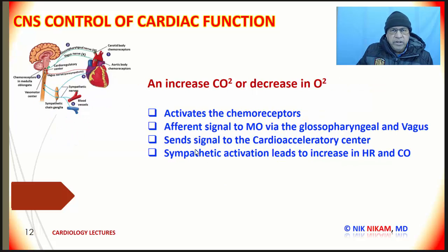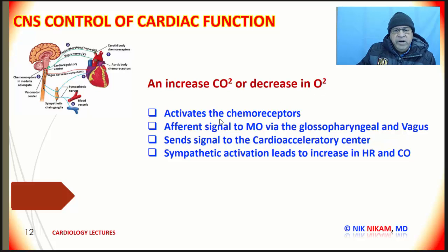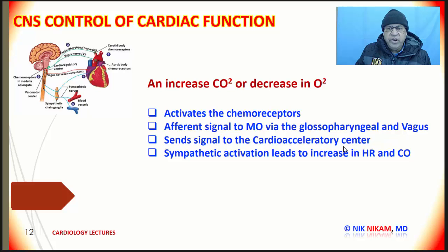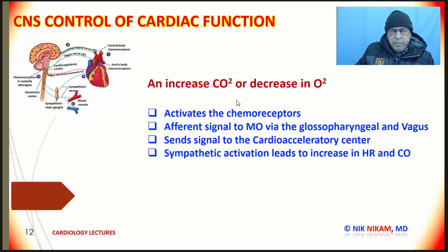Let's talk about the chemoreceptors. The chemoreceptors respond to changes in the arterial pH, oxygen saturation, and carbon dioxide saturation. If there is an increase in carbon dioxide or a decrease in oxygen saturation, it activates the chemoreceptors, located both in the aortic arch and in the carotid body. They send afferent signals to the medulla oblongata, which activates the cardio-acceleratory center, stimulating the sympathetic system, leading to an increase in heart rate and cardiac output, thus driving carbon dioxide out of the body and increasing oxygenation of the blood in the lungs.